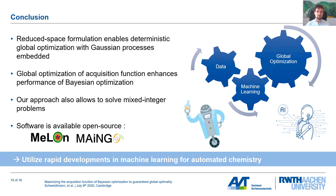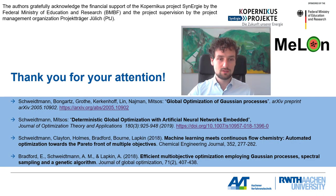I've presented the reduced space formulation, which enables deterministic global optimization with Gaussian processes embedded. We've seen that global optimization of the acquisition function enhances the performance of Bayesian optimization, and our approach also allows solving mixed integer problems. The software is available open source in the toolboxes Mellon and Mango, and we hope this enables us to utilize recent developments in machine learning for automated chemistry in the future. Thank you very much for listening.